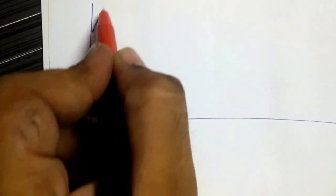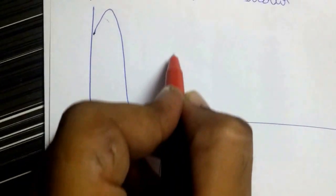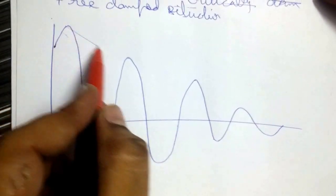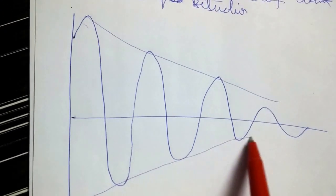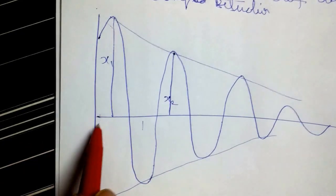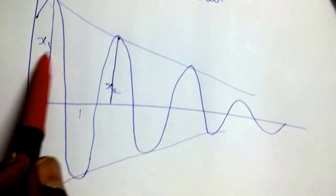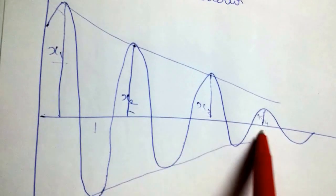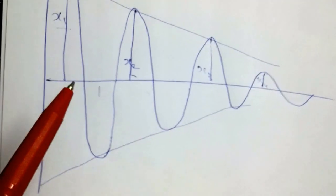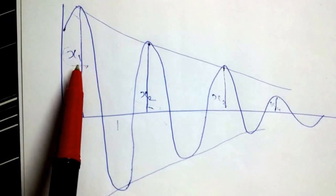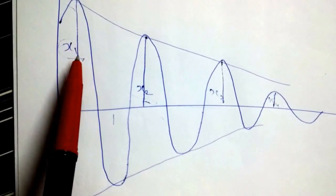Due to damping, the amplitude of vibration goes on decreasing after each successive cycle. We can see this effect of decreasing amplitude: suppose x1 and x2 occur at two different time instants t1 and t2. Then x1 is greater than x2, x2 is greater than x3, which is further greater than x4. This effect arises because of damping.